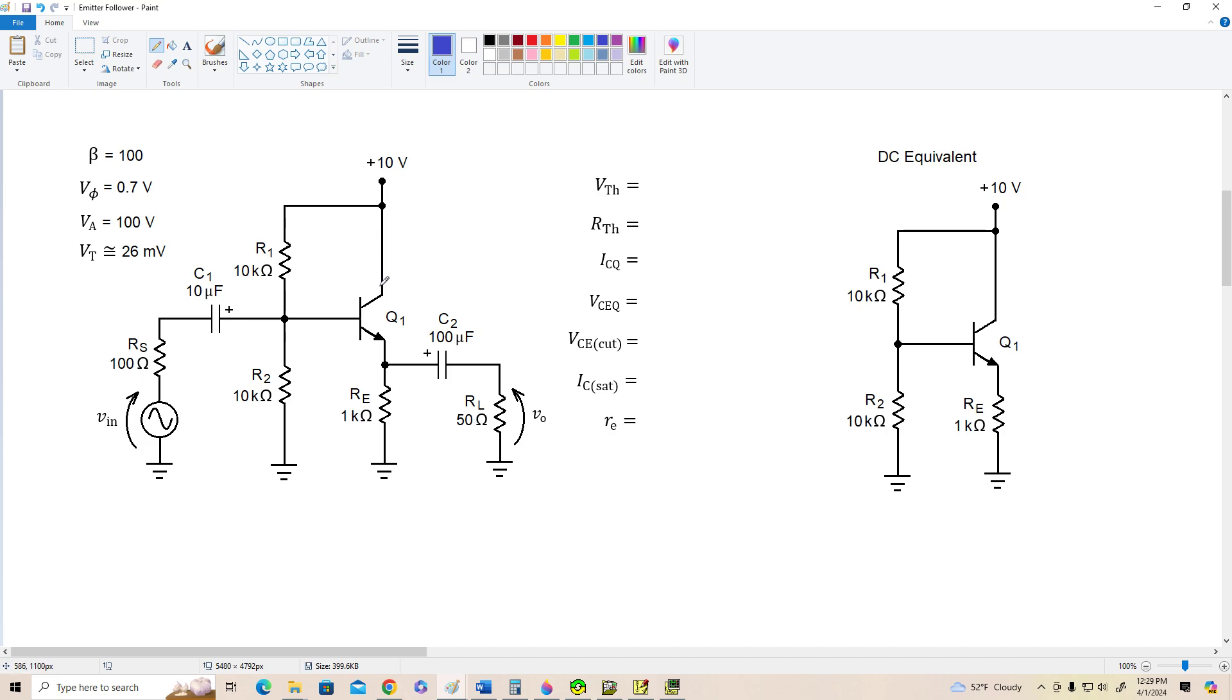Now notice also I don't have a collector resistor in this circuit. We don't need one because we're not taking a signal from the collector terminal. Alright, so over here is our DC equivalent circuit. Pretty simple. We've seen this many times, so let's just go through the analysis.